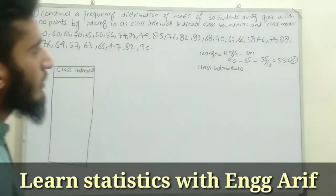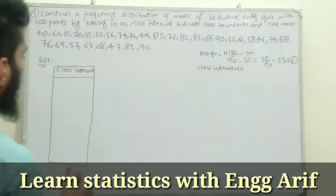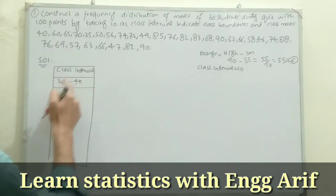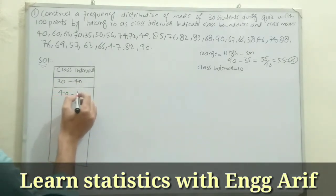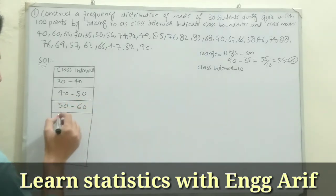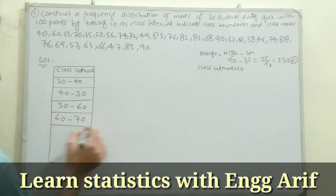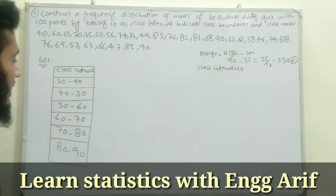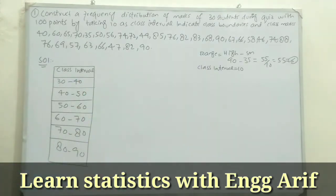The class intervals must span from 30 to 90. So the six intervals are: 30–40, 40–50, 50–60, 60–70, 70–80, and 80–90. Each interval has a difference of 10 as required. You can also start from 35 and end at 95.